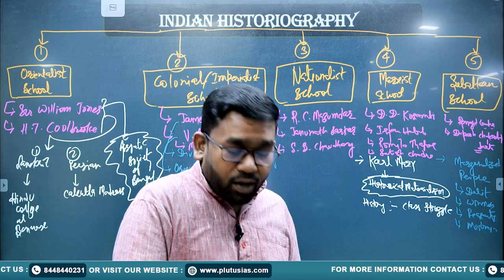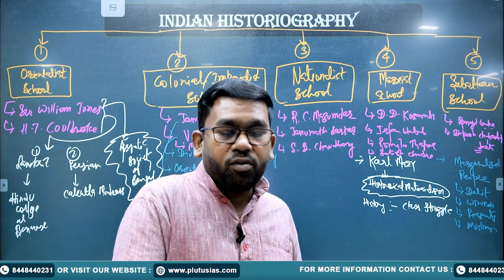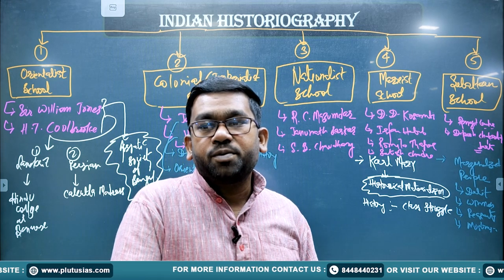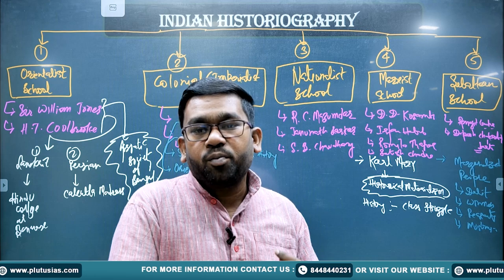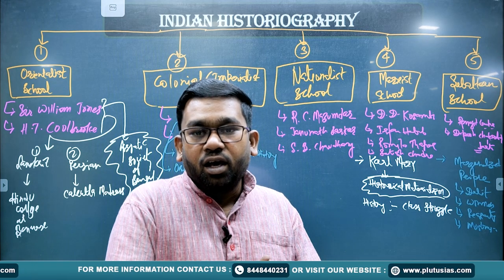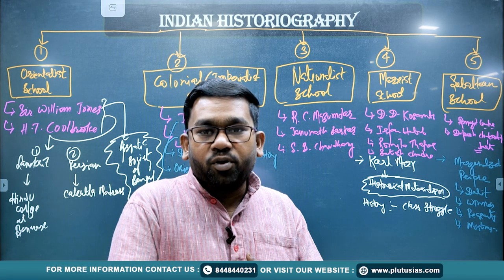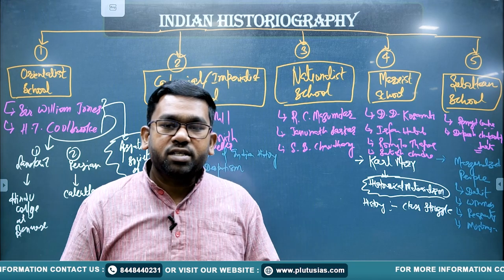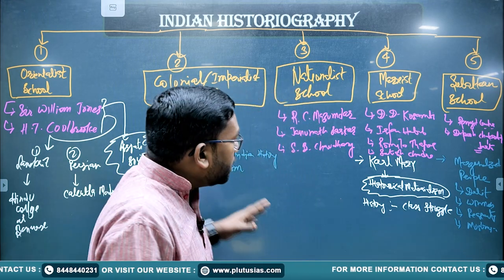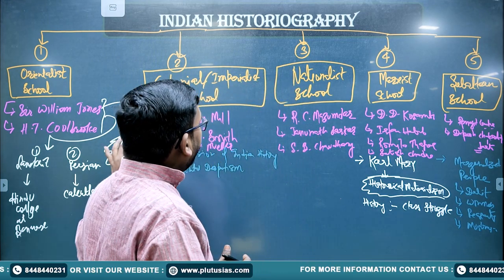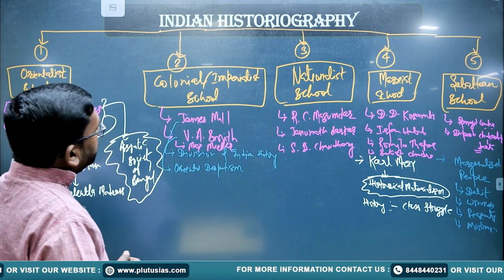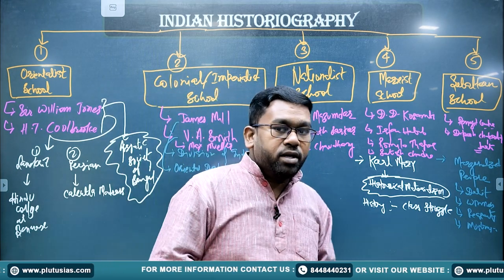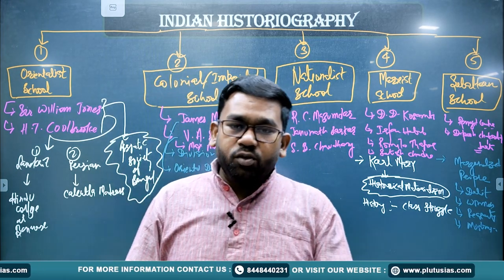So students, you have understood the five important schools of Indian historiography. To summarize, the five schools are: Orientalist, Colonialist or Imperialist, Nationalist, Marxist, and the Subaltern school.